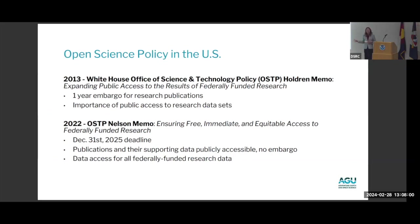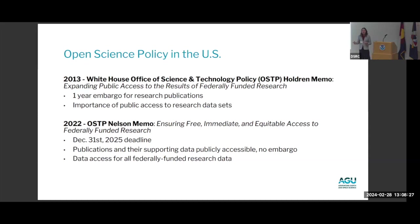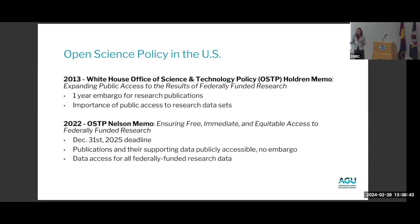There's also a federal push across the US. In 2013, the White House Office of Science and Technology Policy issued the Holdren Memo, dictated to federal agencies to help set their policies on publication, data, and software. It says research publications — any paper that is an output of federally funded research — must be accessible to the public after only a one-year embargo. It also emphasized the importance of public access to research data sets, elevating data and software beyond just papers.